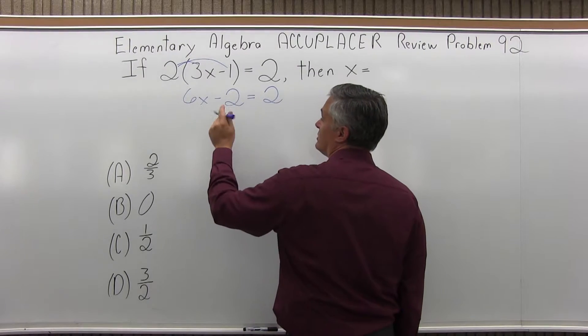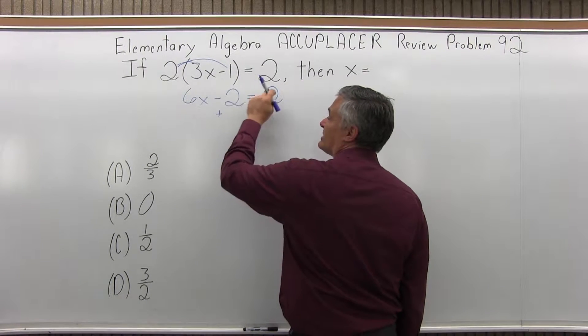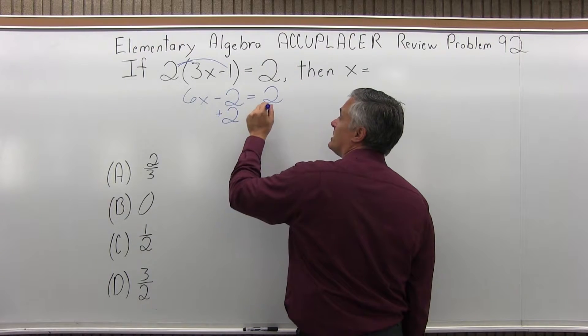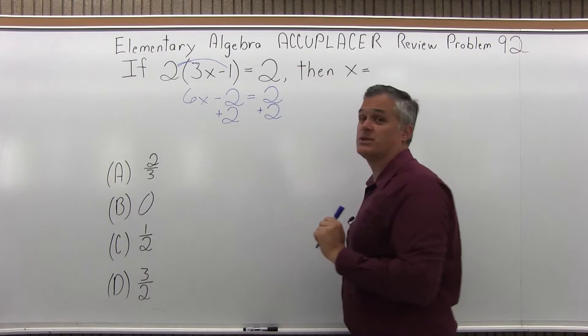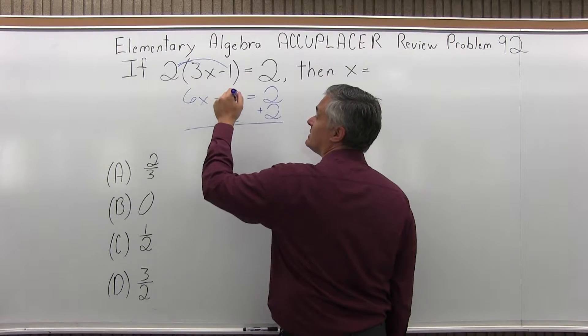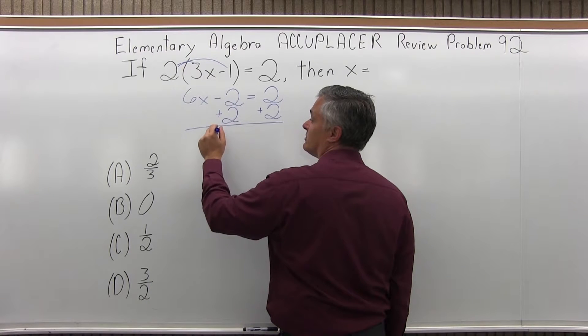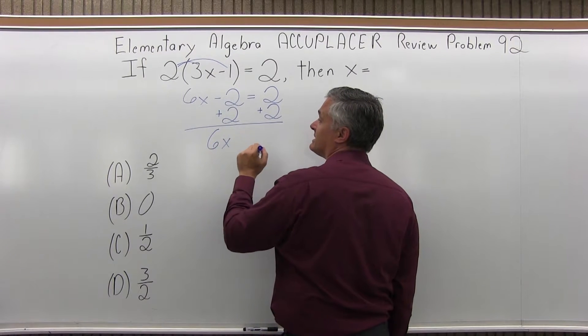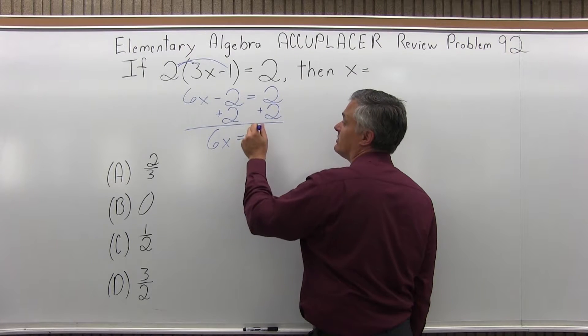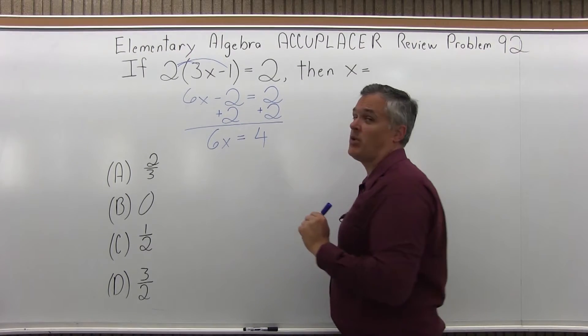So I'd like to get rid of the minus 2. Now careful, it looks like they cancel. They don't. So on the left side of the equals, I'm going to do plus 2. And on the right side of the equals, I'm also going to do plus 2. So now 6x minus 2 plus 2, the minus 2 plus 2 will cancel, leaving me with 6x. And now on the right side, 2 plus another 2, that's 4, positive 4.